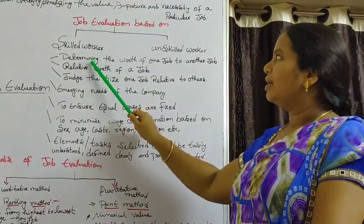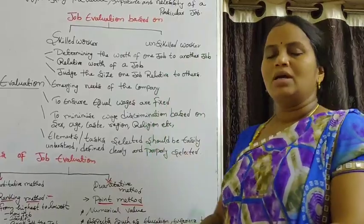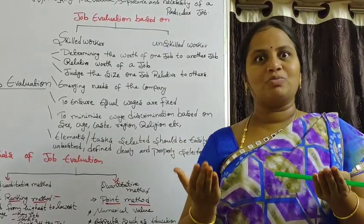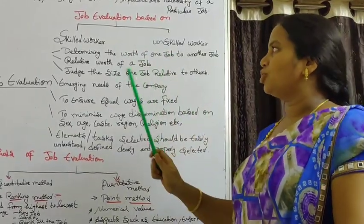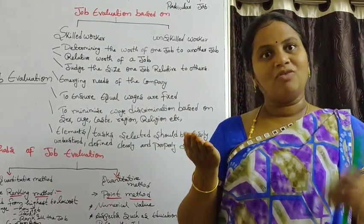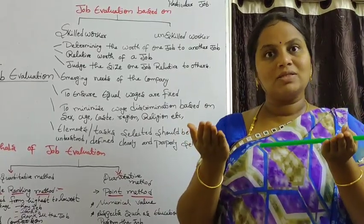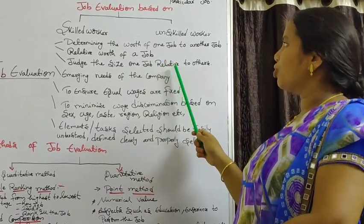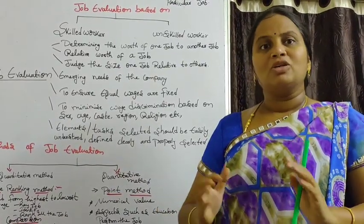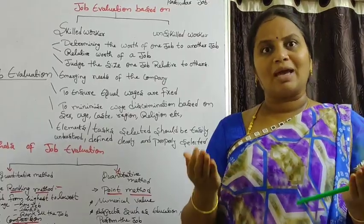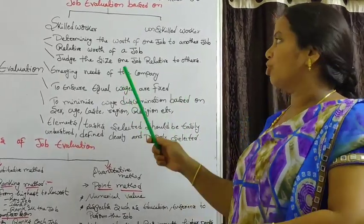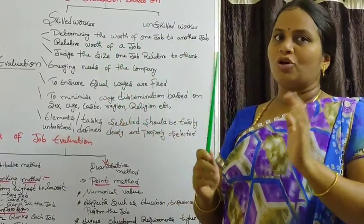In job evaluation, the first point is determining the worth of one job compared to another. One job is very simple, another job is very tough, so the employer has to balance between the two. Second point is relating the worth of your job — what is worthable and what is not — they have to do the justification. Third point is to judge the size of one job relative to another: one job may be completed in half a day, another may take a full month, so the employer has to understand the size and need of each job.